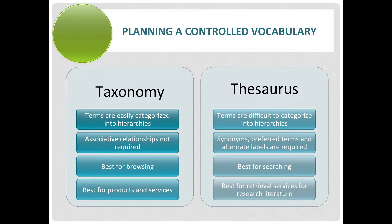A taxonomy is suitable if the terms can easily be arranged into a simple hierarchy, if there is little need for associative relationships, and if the user tends to prefer browsing and link-following types of searches. A taxonomy is much simpler to create and it's also easier to maintain. It works well for products and services.